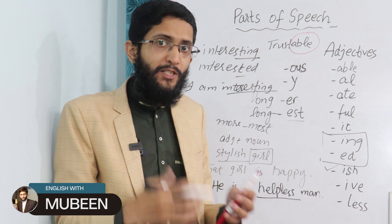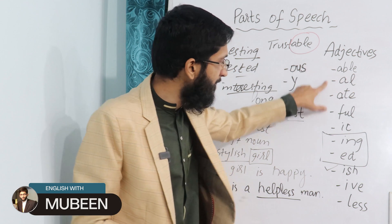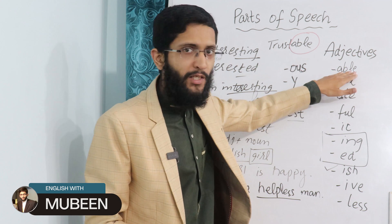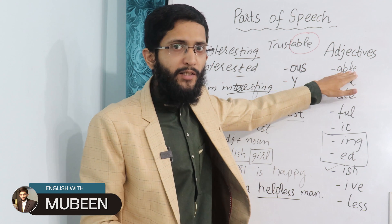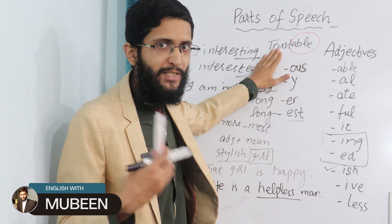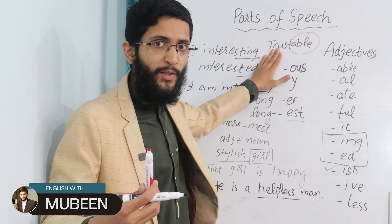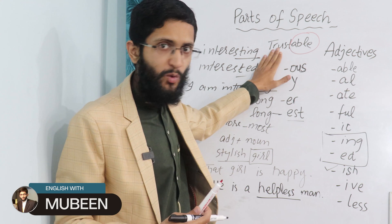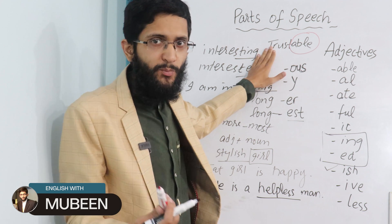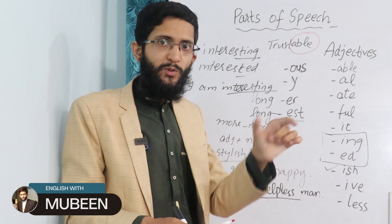So, talking about adjectives — most adjectives end with certain letters. You will find A-B-L-E, 'able', at the end of some adjectives. For example, 'trustable': He is a trustable man. That trustable man met me outside the hospital. 'Moveable' — things we can move easily. So when you Google adjectives, you will see a list of adjectives with these endings.